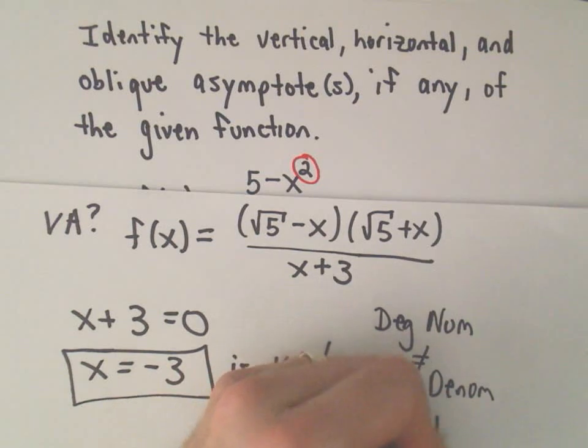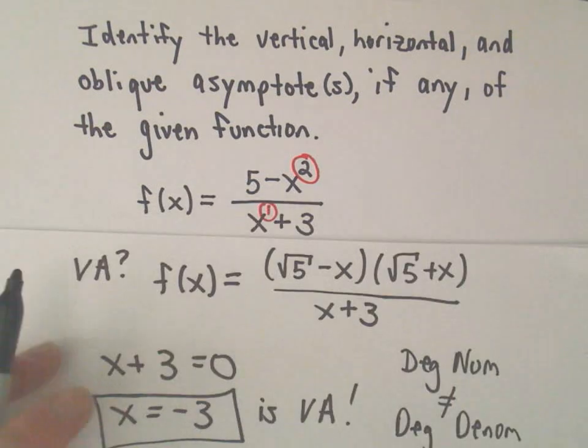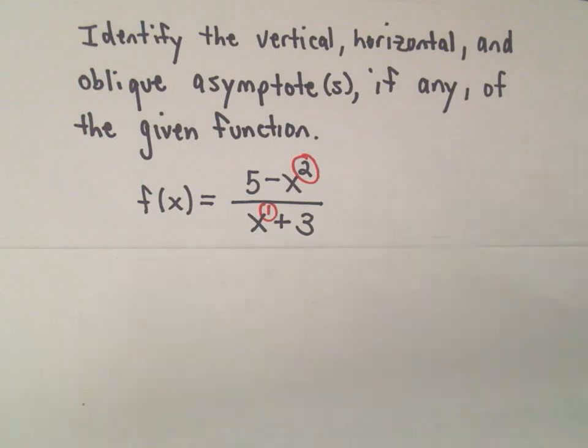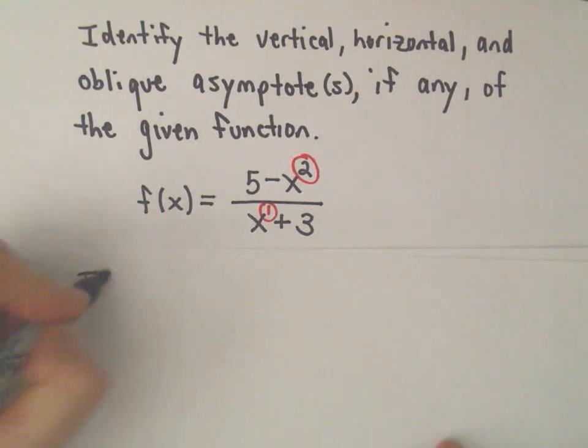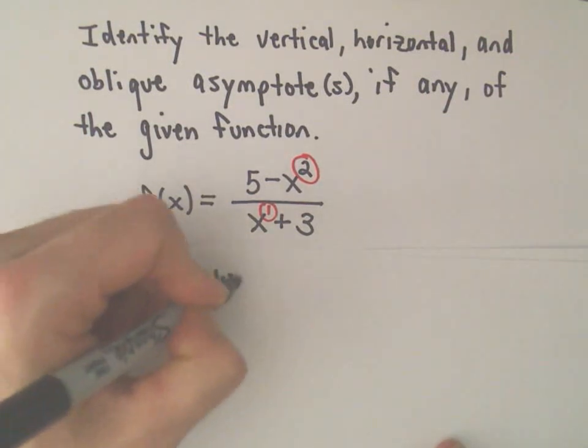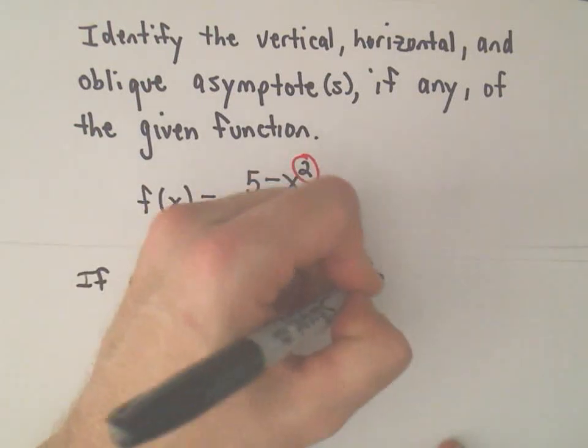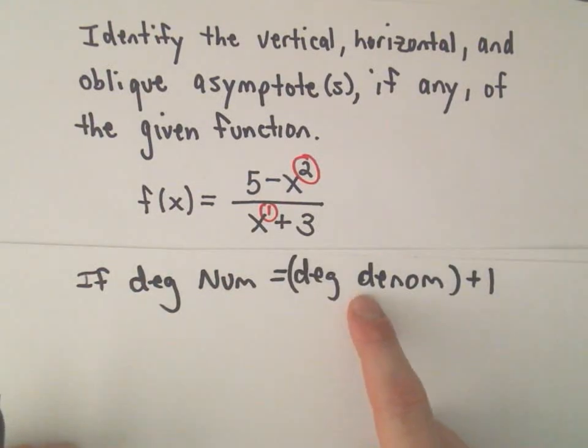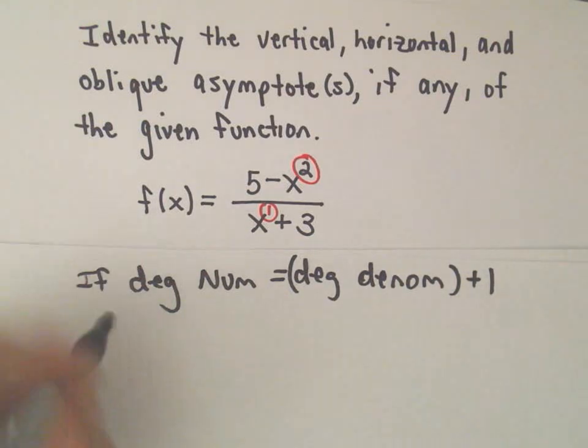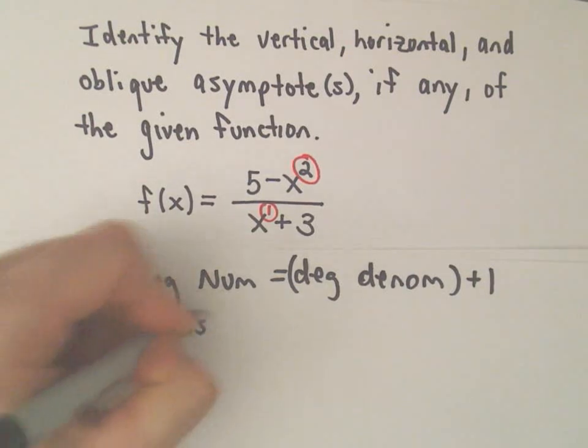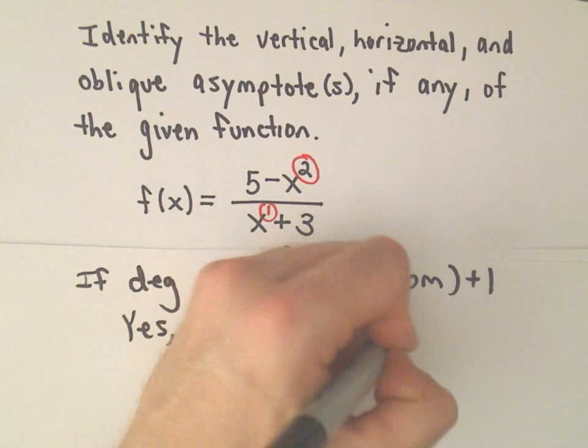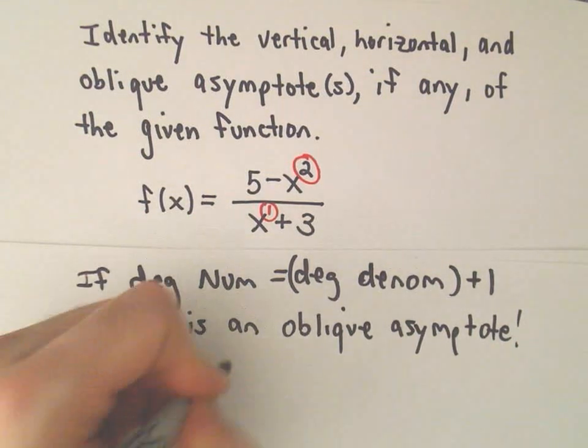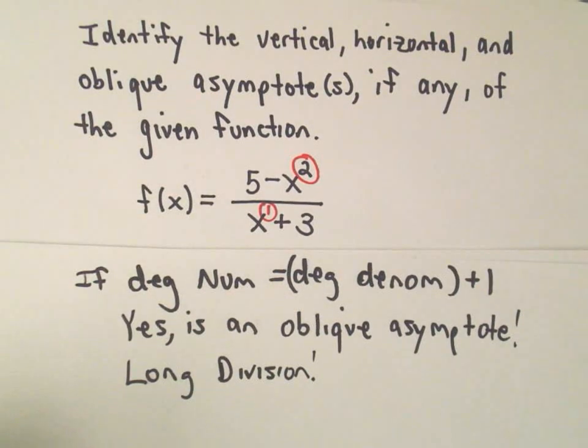But, if the degree of the numerator is exactly 1 larger than the degree of the denominator, there is going to be an oblique asymptote. So, if the degree of the numerator is the degree of the denominator plus 1, right, so they're not exactly equal, that tells us that, yes, there is an oblique asymptote. Well, to figure that out, we have to do long division. So, we will do the long division to determine our oblique asymptote here.